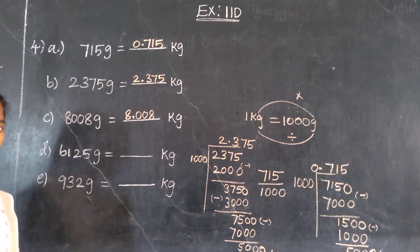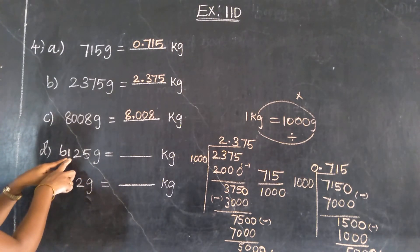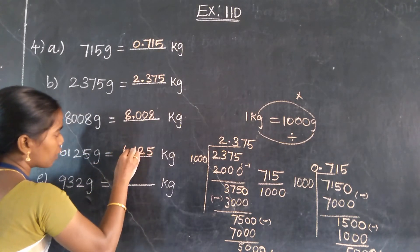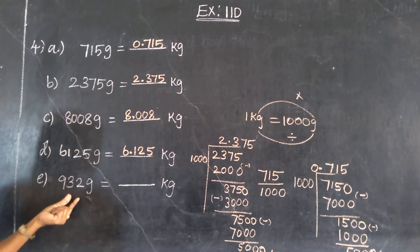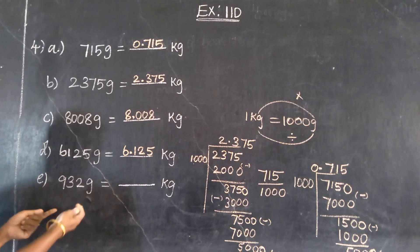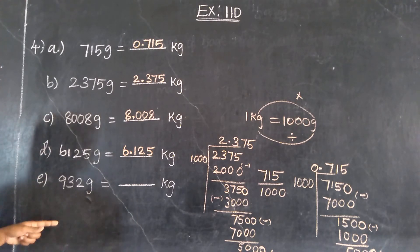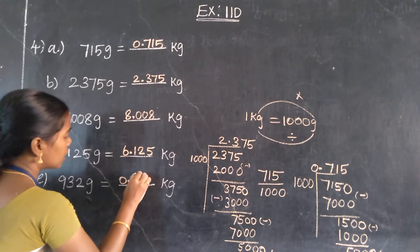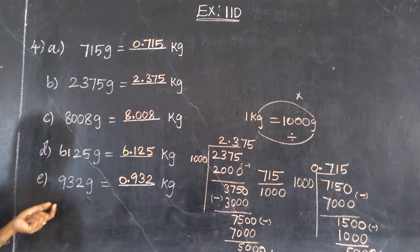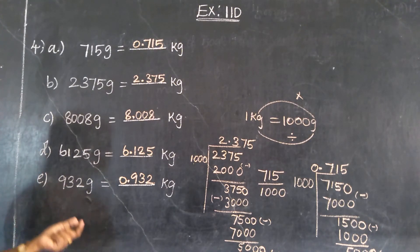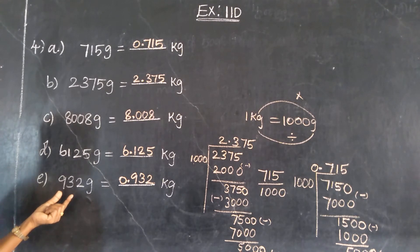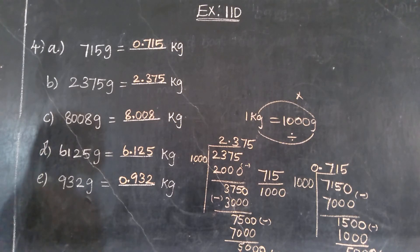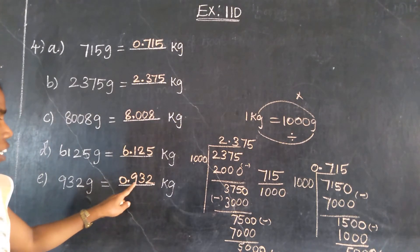Same procedure as the other problem. Then 6125. So same — 6.125 kilogram. Next one: 932. It is 932. It is a 3-digit number. So it is the same procedure. So 0 point first value — 0.932 kilogram. Again, 1 kilogram is equal to 1000 grams. It is 932. So 1000 grams are not equal — 932 is less than 1000. It is not equal to 1 kilogram value. So it is not possible. So 0.932.